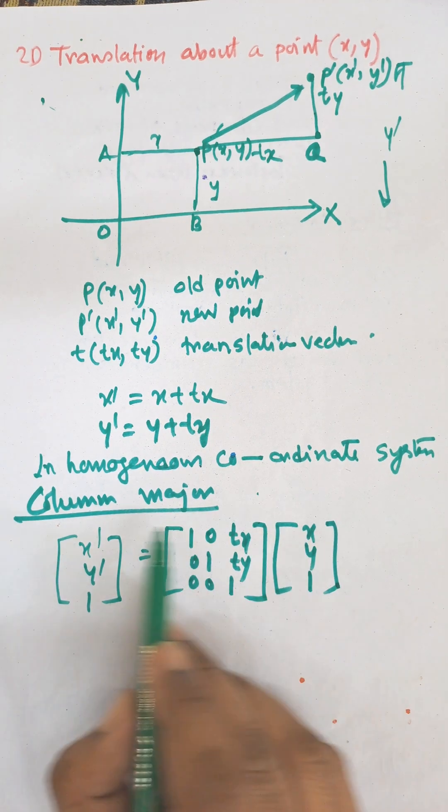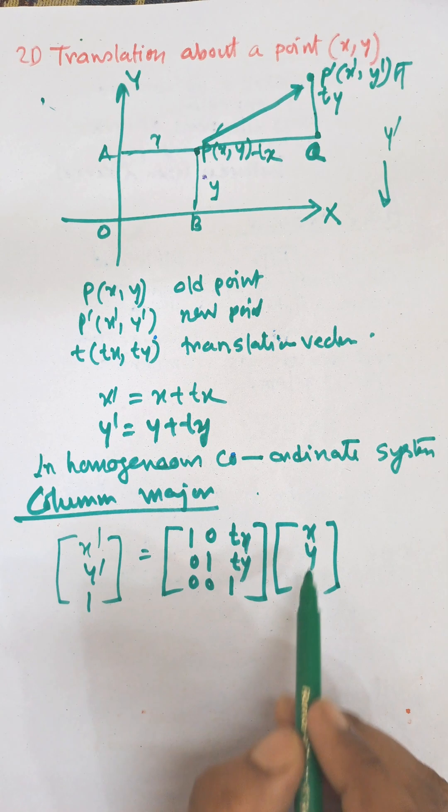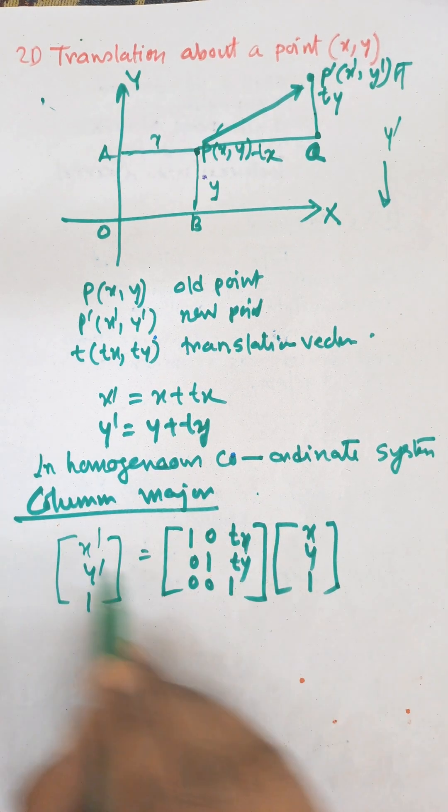If you multiply this one, we will get this equation: 1 times x is x, then x + tx, then 0, y + ty. So this is the column matrix presentation.